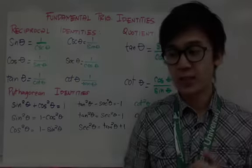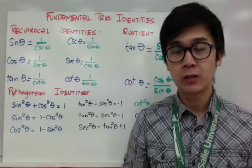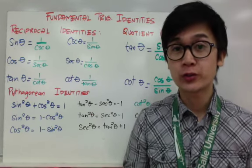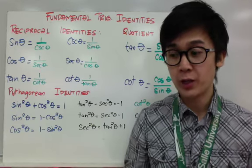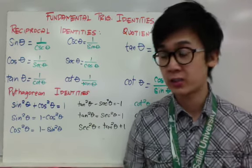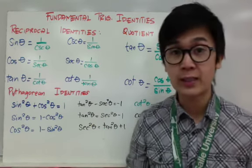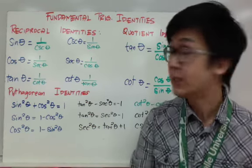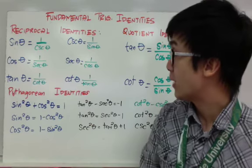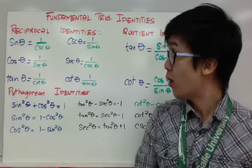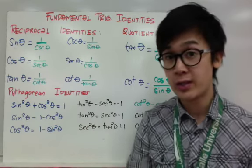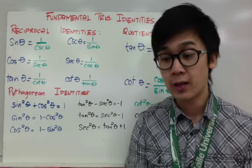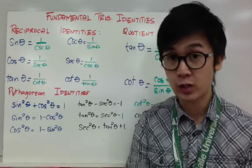One of the required skills in solving for x in a trig function is that you should know how to solve equations from algebra. Here are the trigonometric identities we are using in this topic: the reciprocal identity, the quotient identity, and the Pythagorean identity. We will use all these identities in solving for x and later in proving identities in trigonometry.